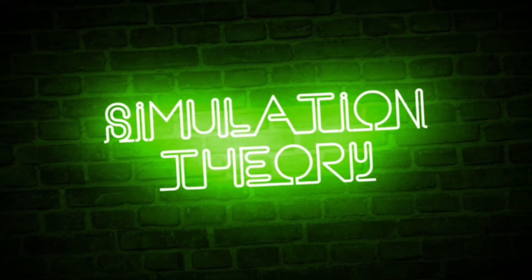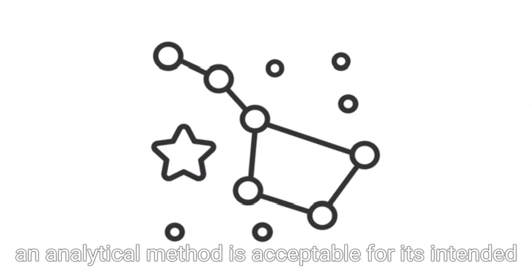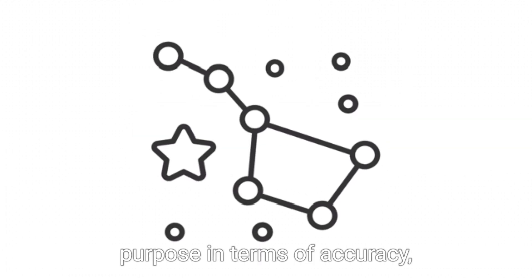What is method validation? Method validation is the process of proving that an analytical method is acceptable for its intended purpose in terms of accuracy, precision, specificity, and other performance characteristics.